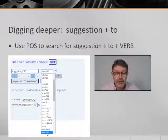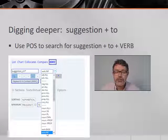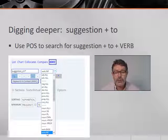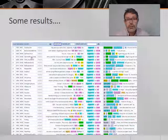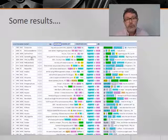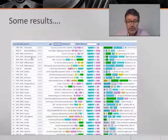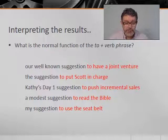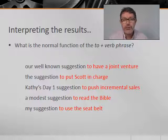We can also dig deeper in various ways. For example, we can add a part-of-speech search to our exploration of suggestion by choosing verb infinitive from the POS, or part of speech, menu on the search page. This search will give us all the verbs that follow suggestion to. Some results are shown on this page. Bear in mind your results might be a little different as the COCA content has expanded over time. Even so, this should be enough to indicate a pattern of meaning for the construction suggestion to.